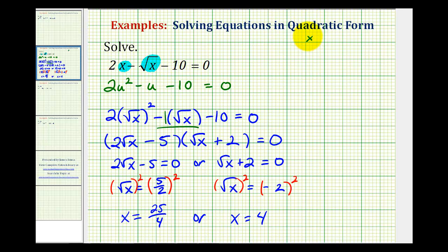Let's first check x = 25/4. So we have 2(25/4) - √(25/4) - 10 = 0.